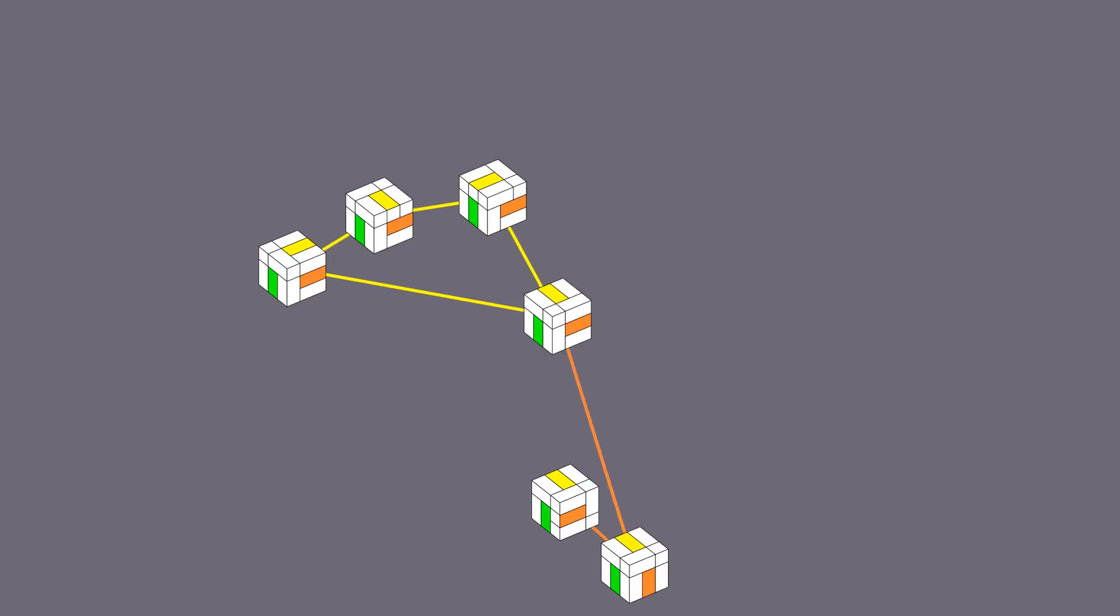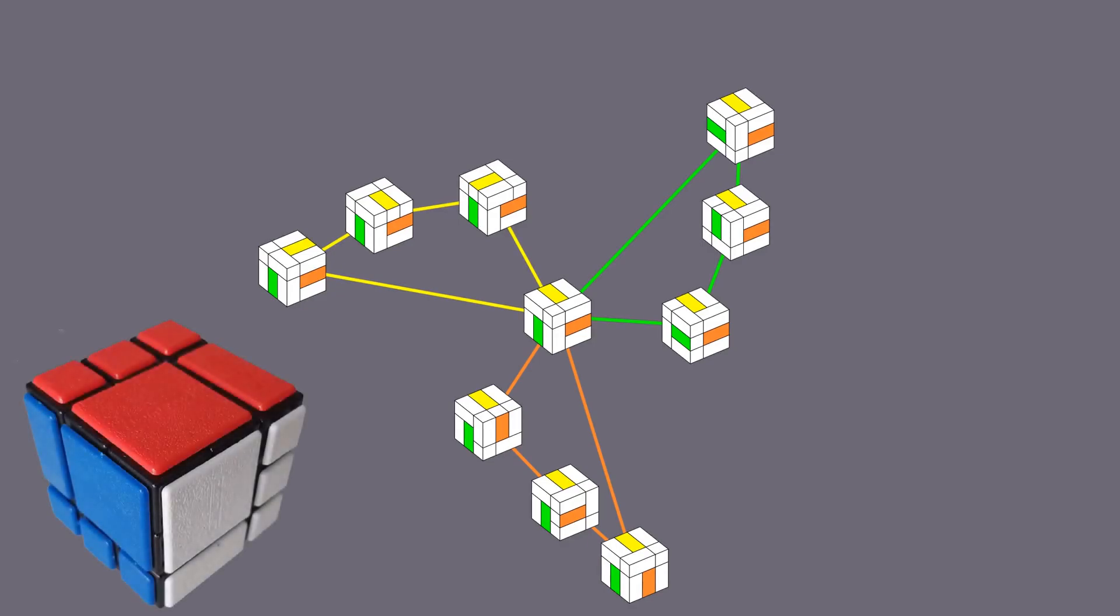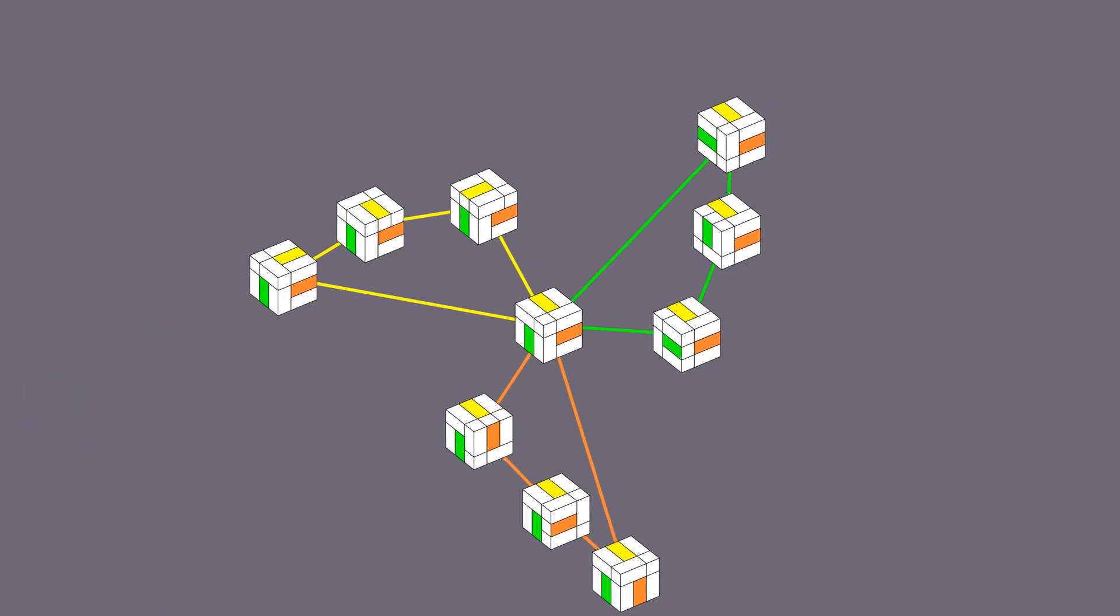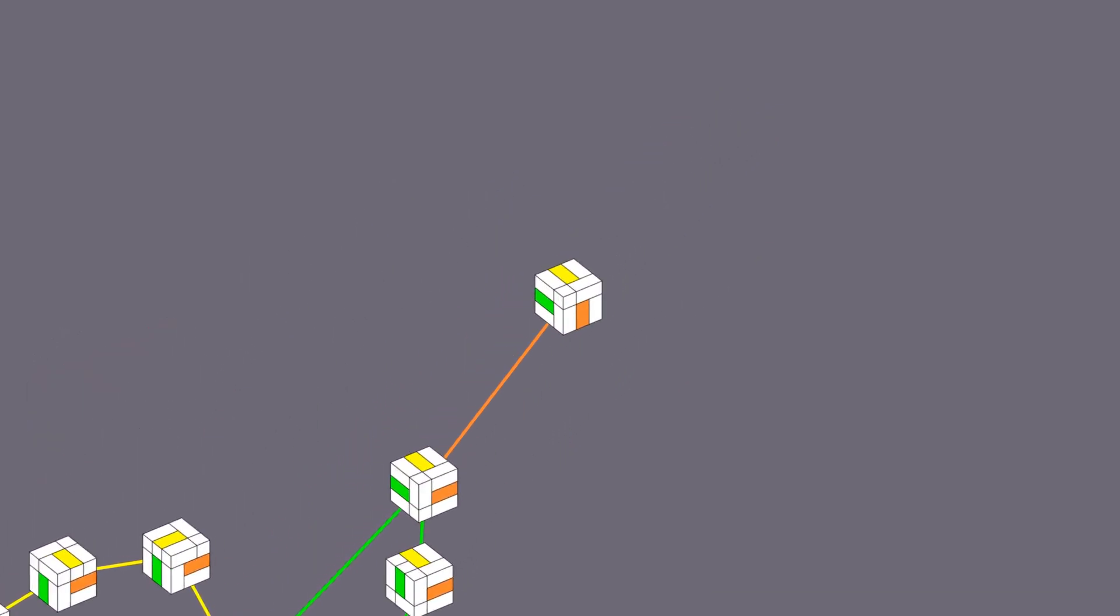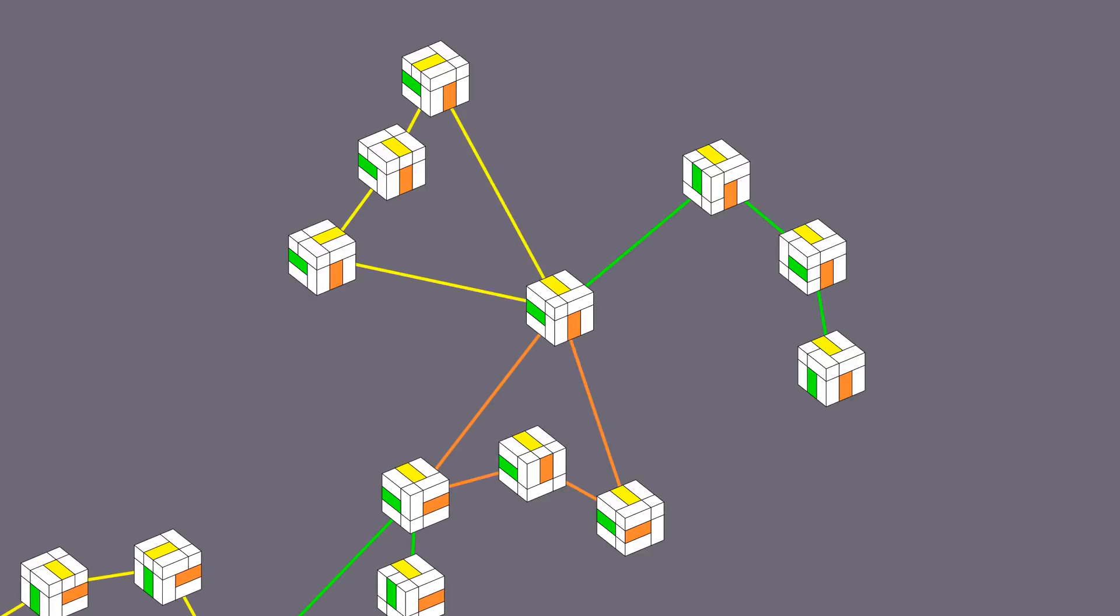We can do the same for the right face and for the front face. Don't forget we cannot ever turn any faces on the back side of the cube as they're bandaged into one big block. Now let's choose one of the discovered shapes from which we can move further.